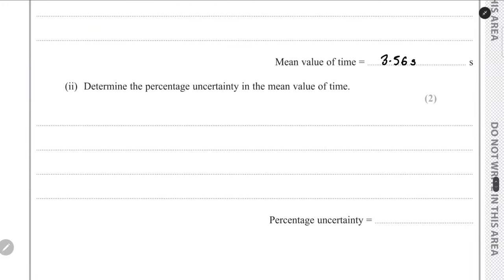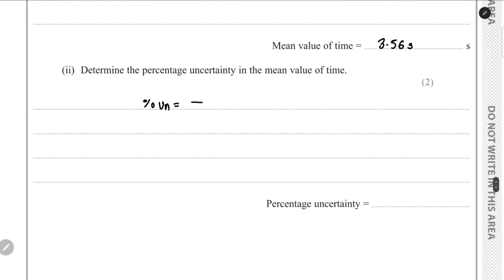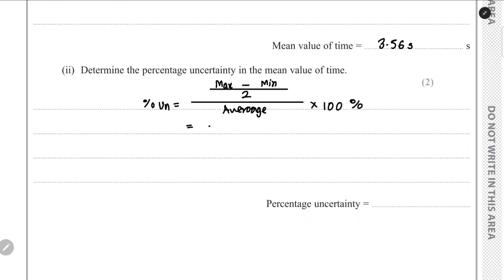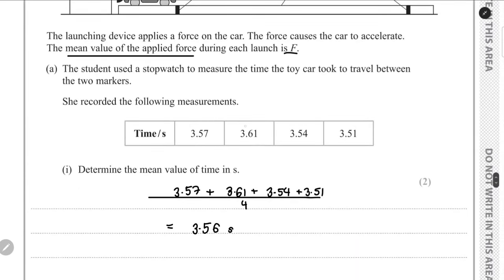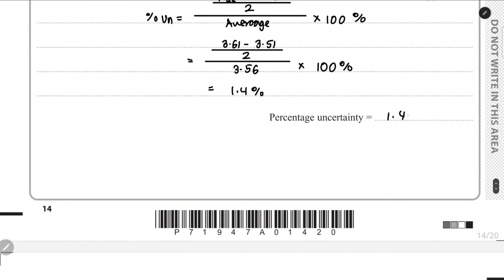For the percentage uncertainty with multiple readings, the formula is: (max − min) / 2 / average × 100. Here (3.61 − 3.51) / 2 / 3.56 × 100 = 0.05 / 3.56 × 100 = 1.4%. So the percentage uncertainty in the time measurement is 1.4%.